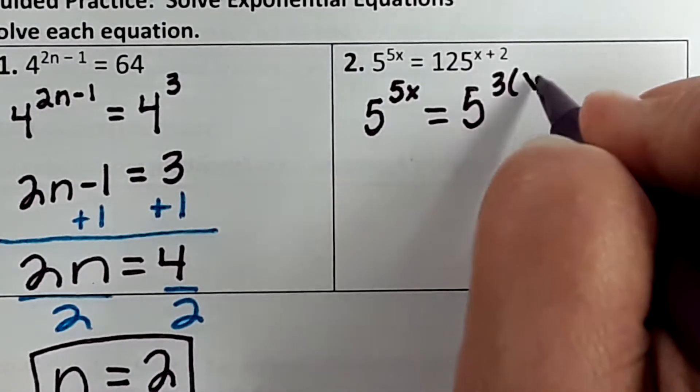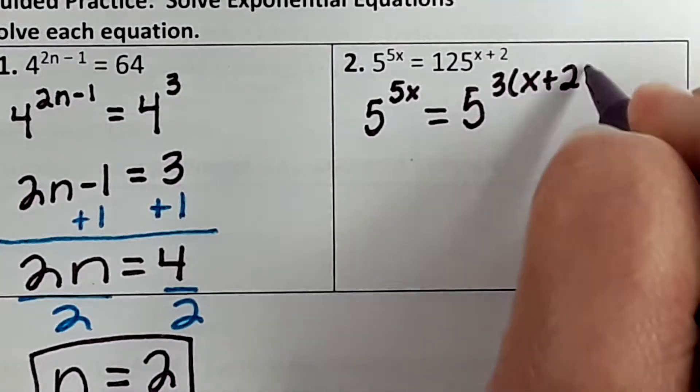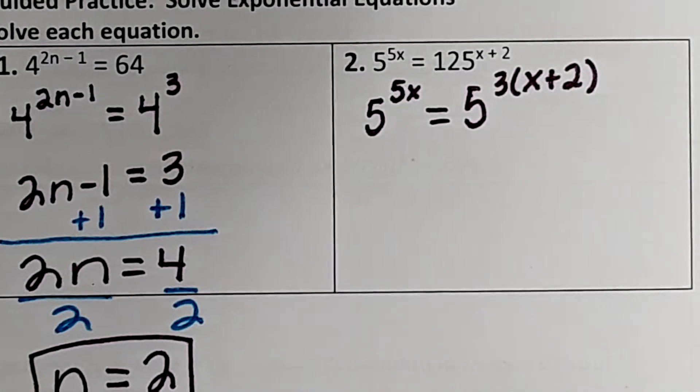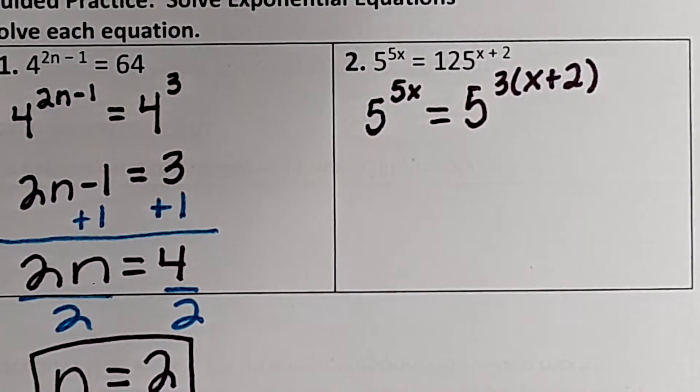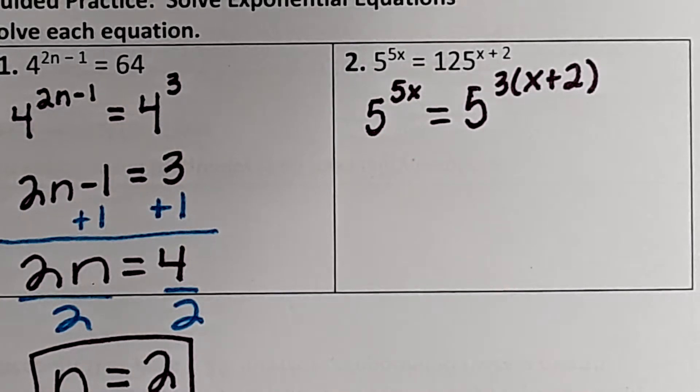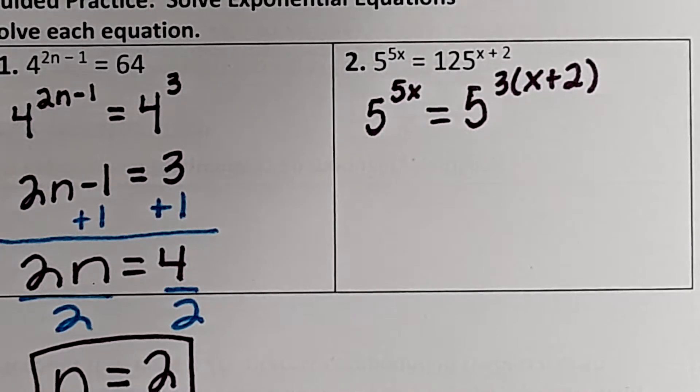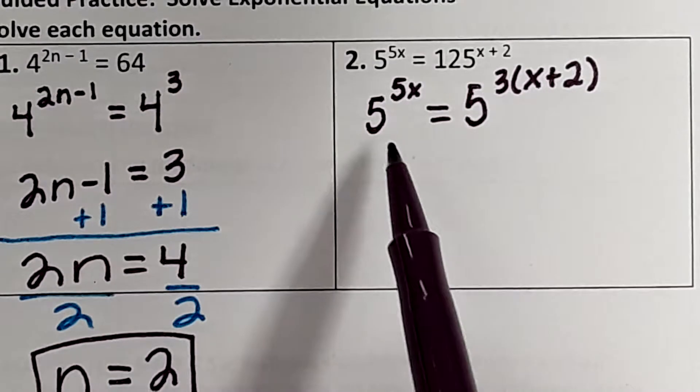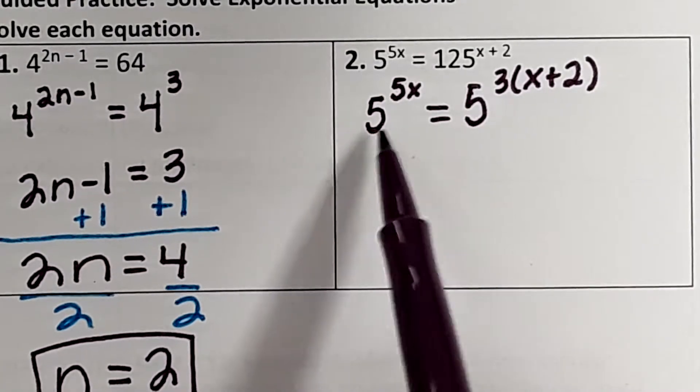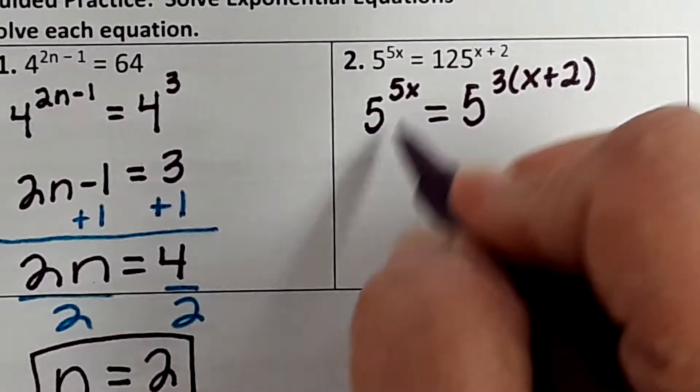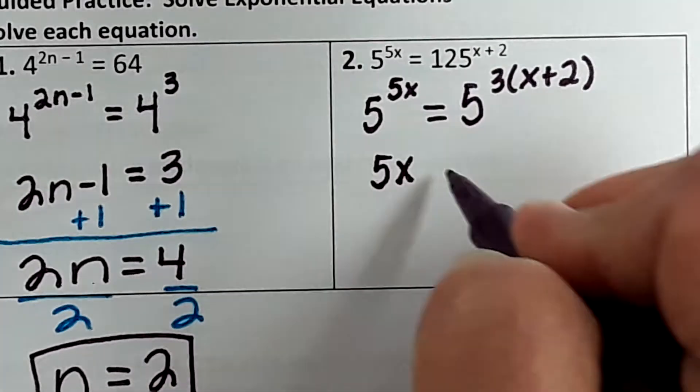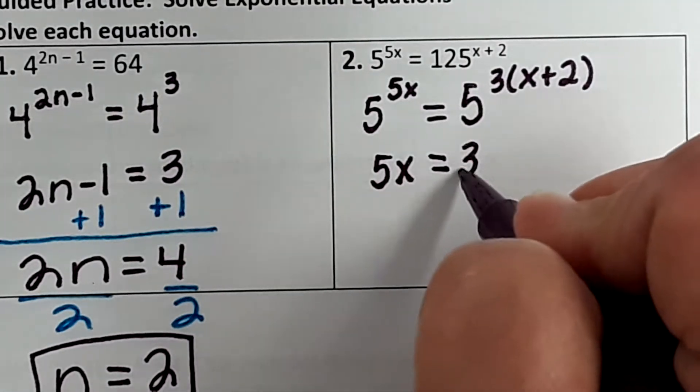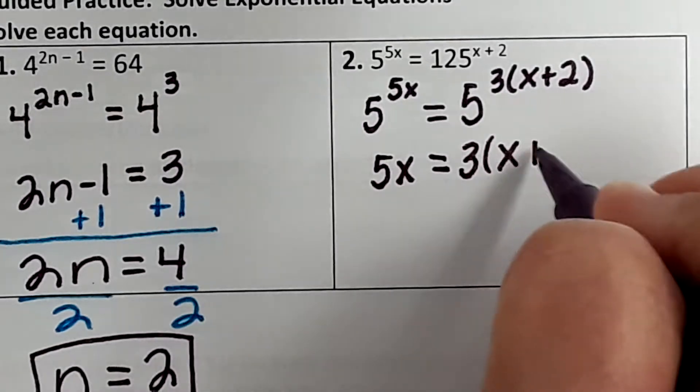But because there was an x plus 2, you have to distribute it. So we're going to just put that 3 in front of the x plus 2. You still have to use the parentheses. You can't just put it in front of the x. Now the bases are the same, 5 and 5. So we can write the exponents equal to each other.